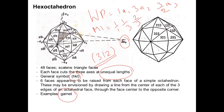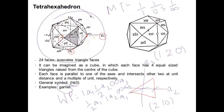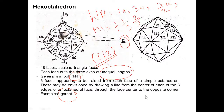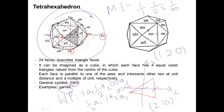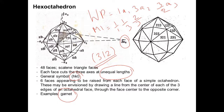Garnet appears here as an example — it also appeared in the tetra hexahedron. Comparing: the tetra hexahedron has 24 isosceles triangular faces with Miller indices hk0, while the hex octahedron has 48 scalene triangular faces with Miller indices hkl. I hope you liked this quick lesson on the normal class of the isometric system. We will cover the normal class of other systems in due course. Please ask any questions in the comments and have an awesome day.